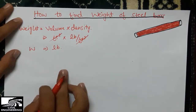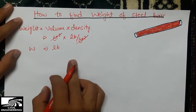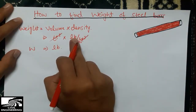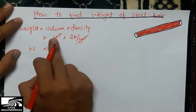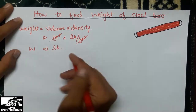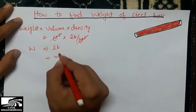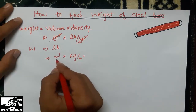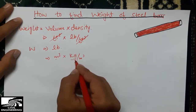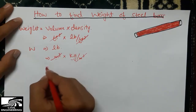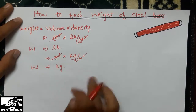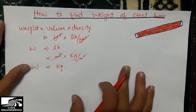Similarly, if you use metric units — volume in cubic meters multiplied by density in kilograms per cubic meter — the cubic meter units cancel, and the weight of the object will be in kilograms.